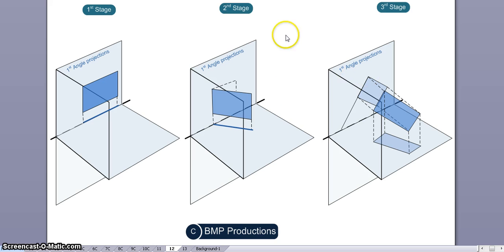This problem is in three stages. In the first stage, this lamina is sitting parallel to the vertical plane here, and you see this one line as in the top view.